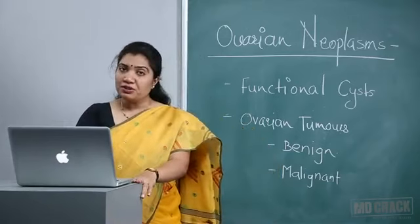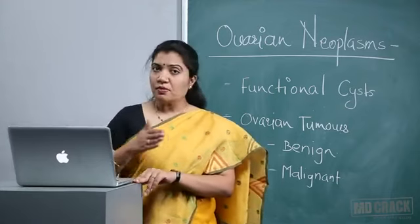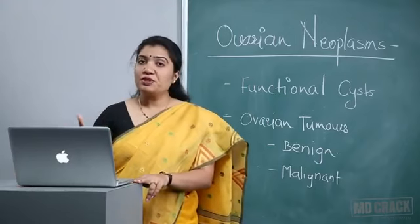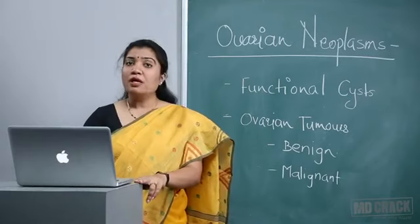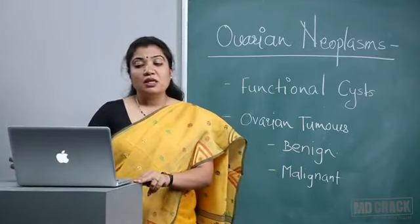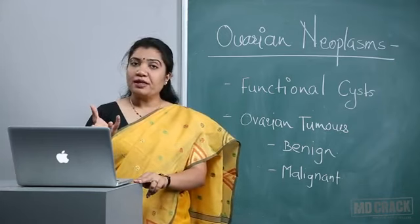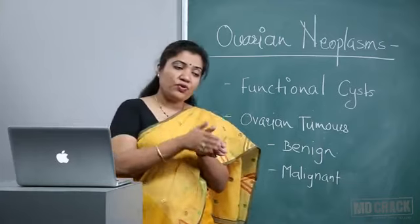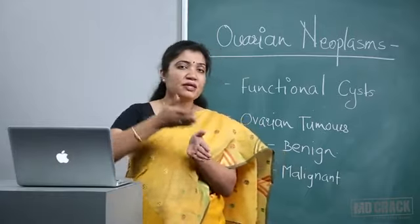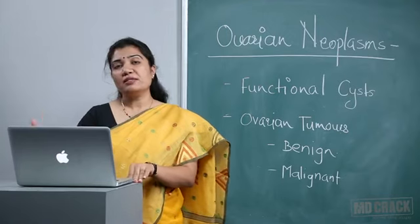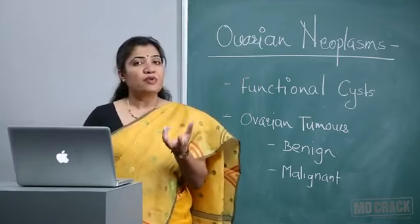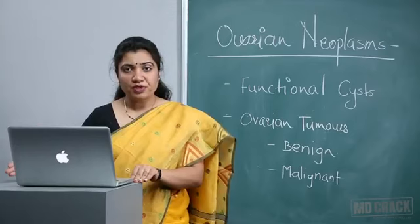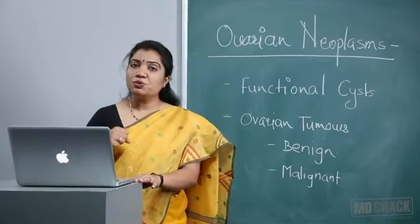How do we manage functional cysts? They are not troublesome, but if bigger in size — around 5 cm or more, some books say 7 cm — they are likely to undergo torsion, especially simple fluid-containing cysts that are freely mobile. We give rest to the ovary by giving OC pills over three cycles; there will be no ovulation and the cyst will gradually get absorbed.